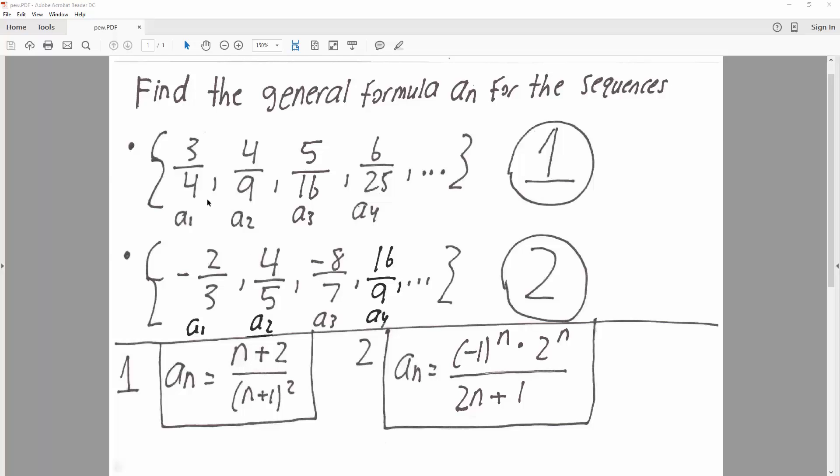Now for the denominator, again, starting off is 1, and we have 2 squared, 3 squared, 4 squared. And if 1 is going to be 2 squared, that means n plus 1 squared should be what we want for the denominator. And that's all we need to do for the first question.